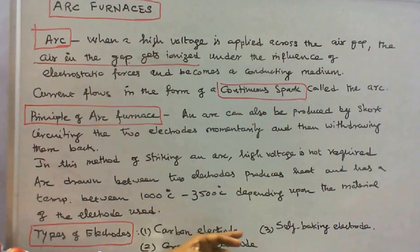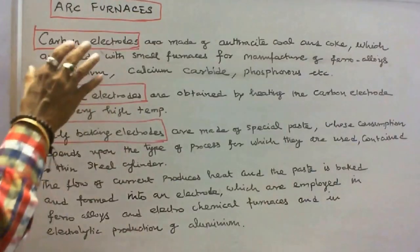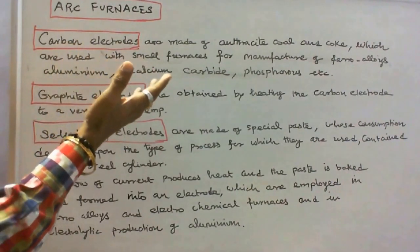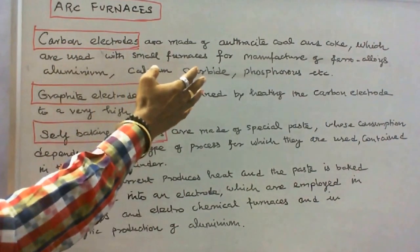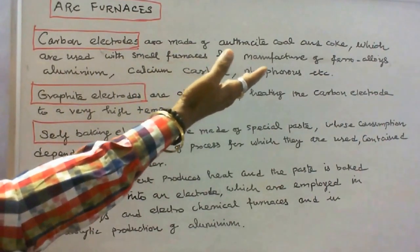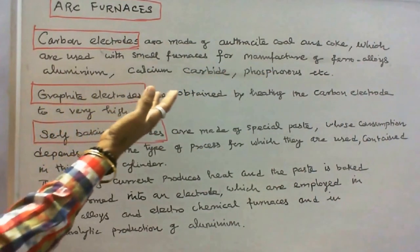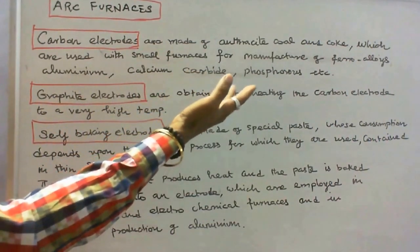Carbon electrodes are made of anthracite coal and coke, which are used with small furnaces for manufacture of ferro alloys, aluminum, calcium carbide, phosphorus, etc.